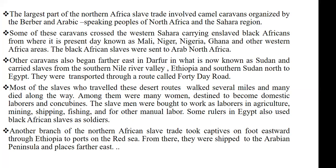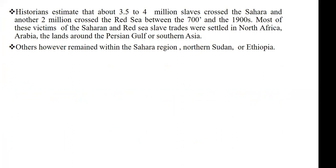Another branch of the northern African trade took captives or slaves all the way from the east side, through Ethiopia, to ports or harbors on the Red Sea. When the people got to the Red Sea, they were shipped to the Arabian Peninsula and other places. Historians have estimated about 3.5 to 4 million slaves who are said to have crossed the Sahara area, and about 2 million people who are said to have crossed the Red Sea and out of the continent of Africa.